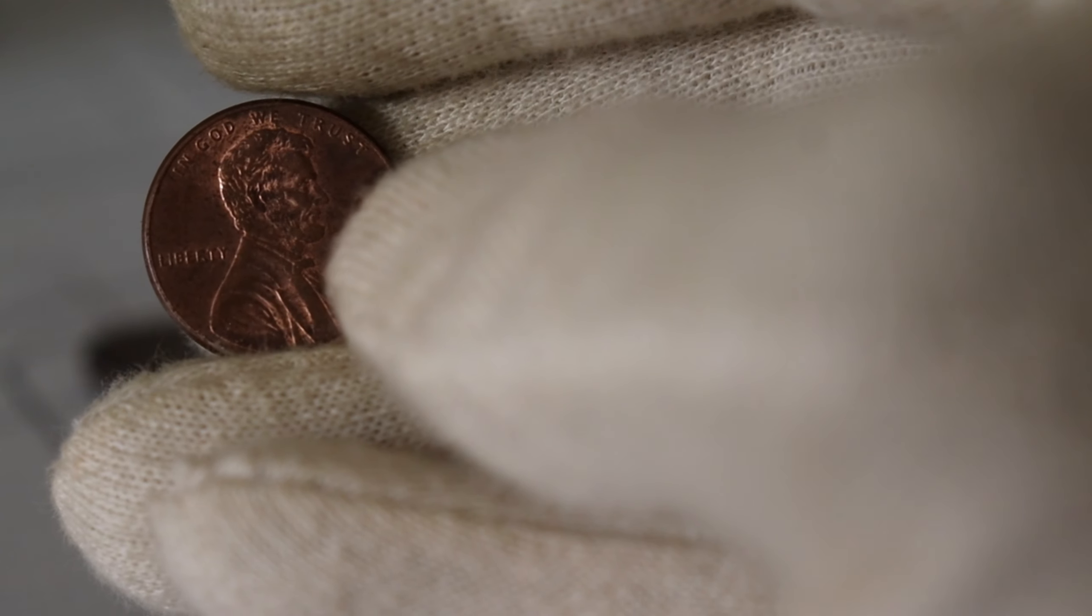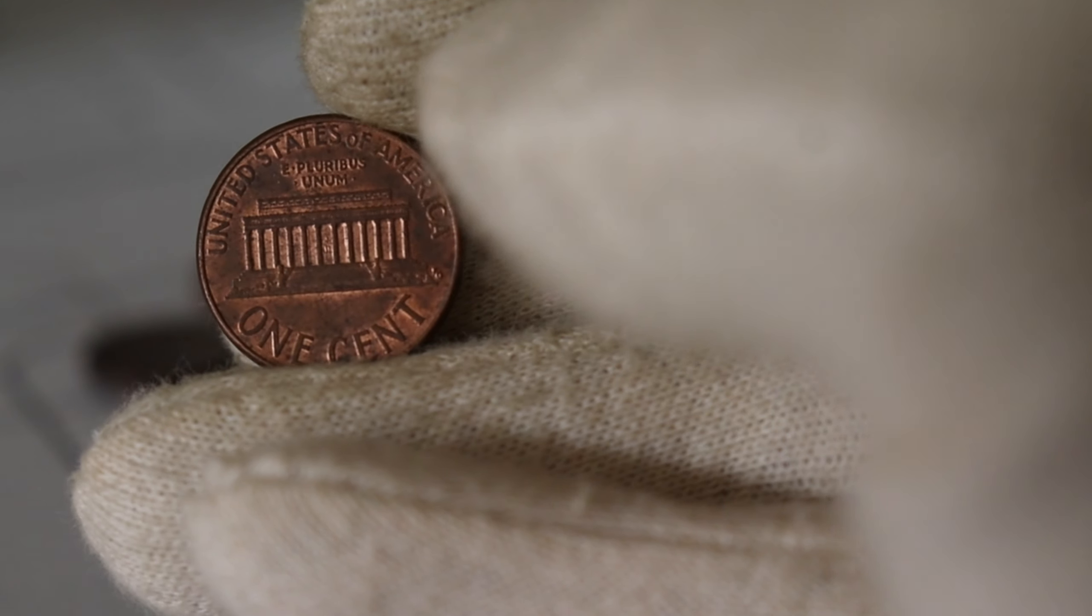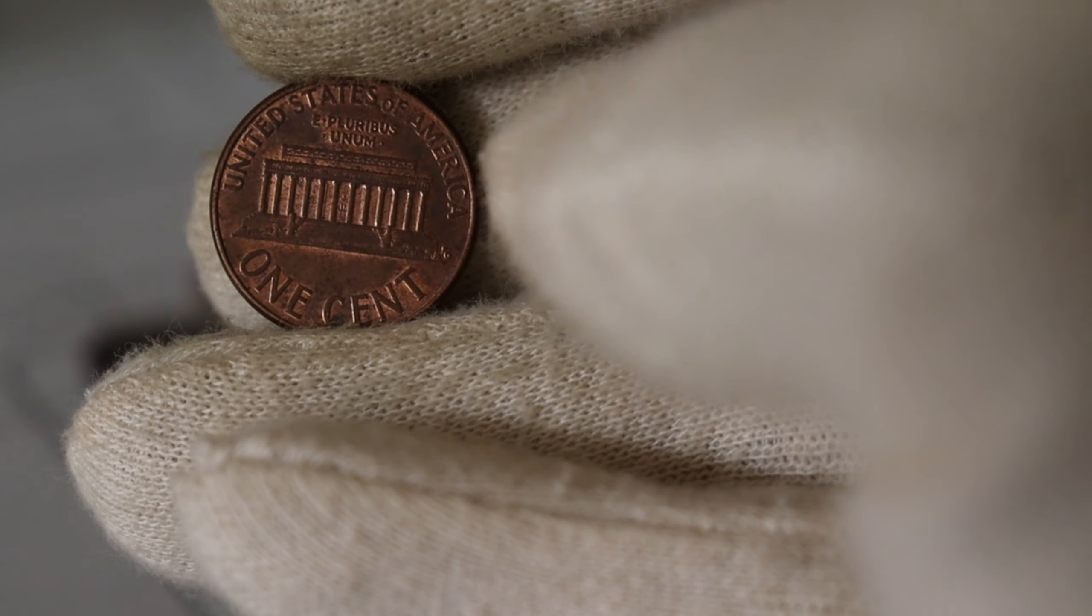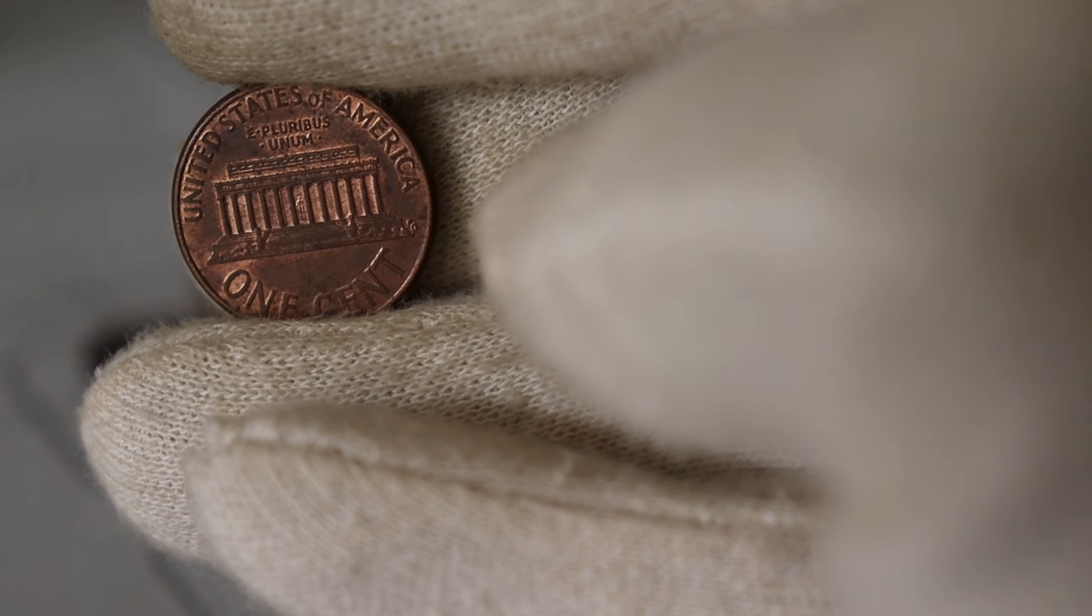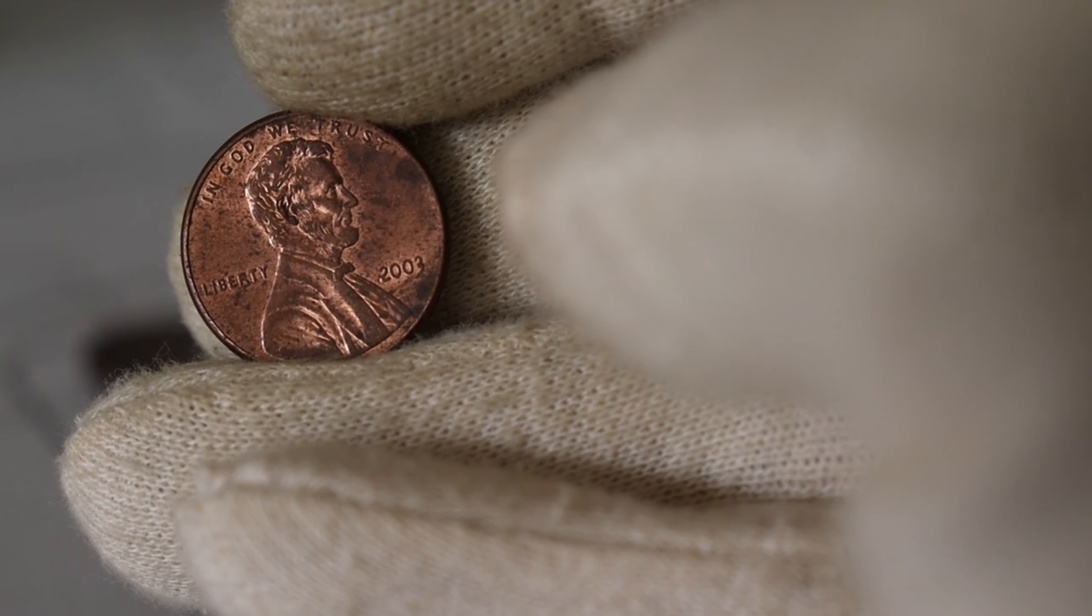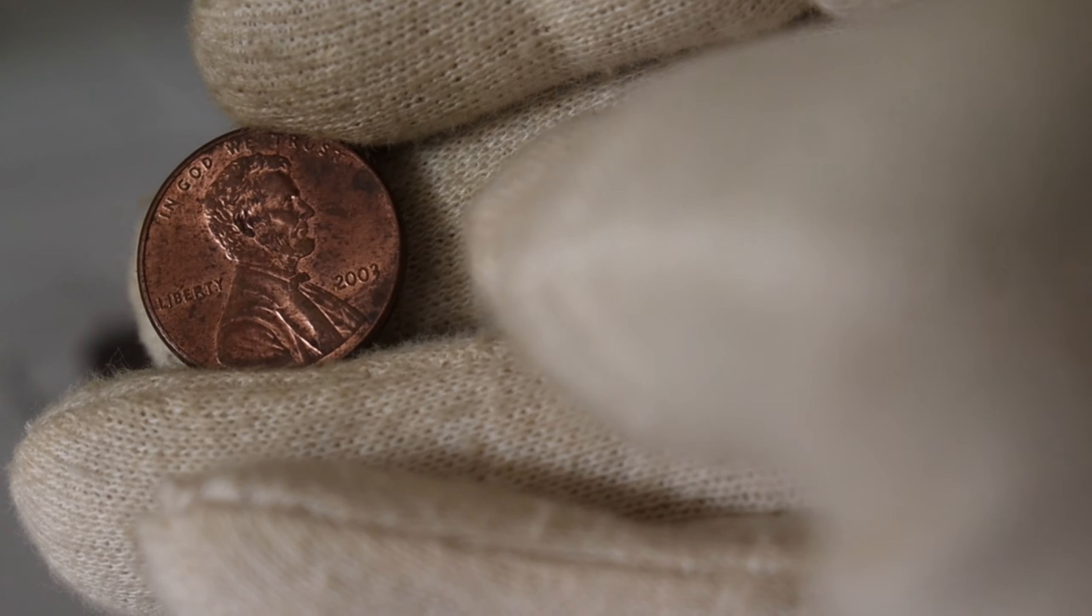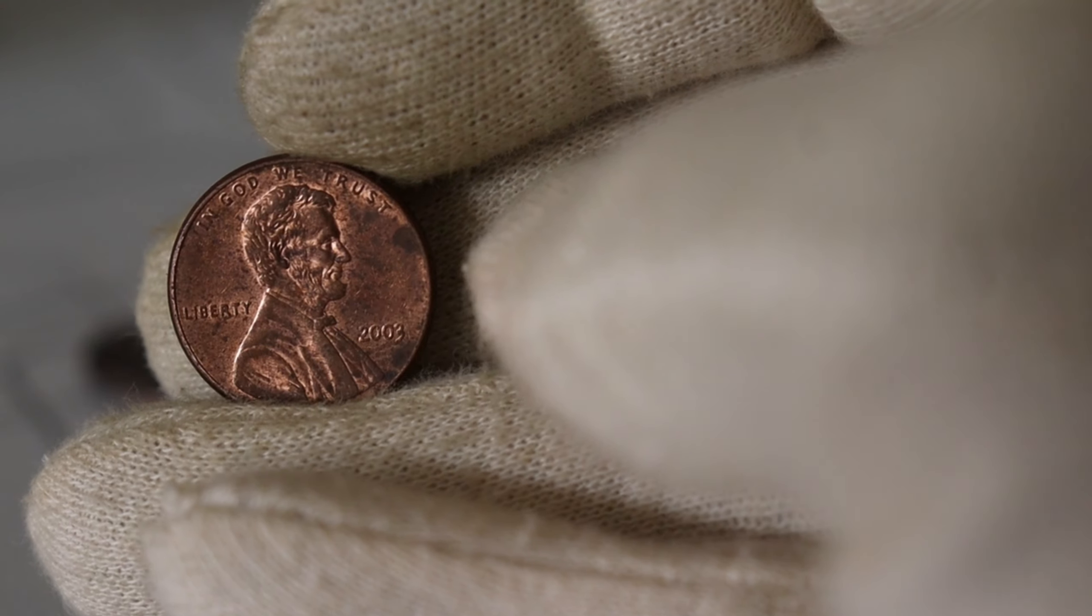While most 2003 pennies are common in circulation, there are certain varieties that can make your coin more valuable. Keep an eye out for any minting errors, double dies, or other anomalies. For example, some collectors seek out the 2003 DDO, double die obverse, variety, which can command a premium in the market.